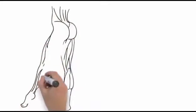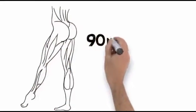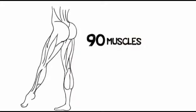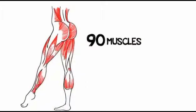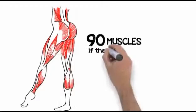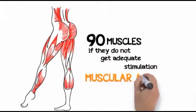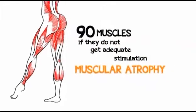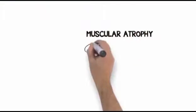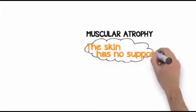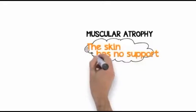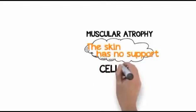You have about 90 individual muscles from your waist down to your ankles. When these muscles are neglected and don't get proper stimulation, they get very mushy, flat, and droopy. The physiological term is muscular atrophy. When the lower body muscles are in that condition, the skin on top of them has no support. So it shows the dimples and bumps, which we all refer to as cellulite.